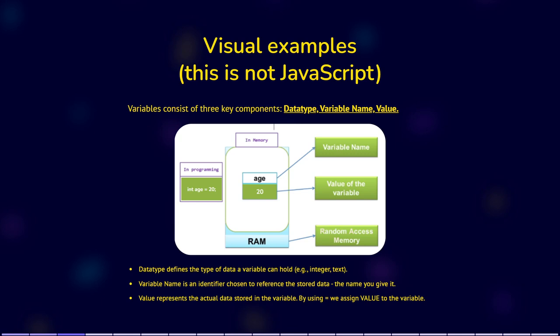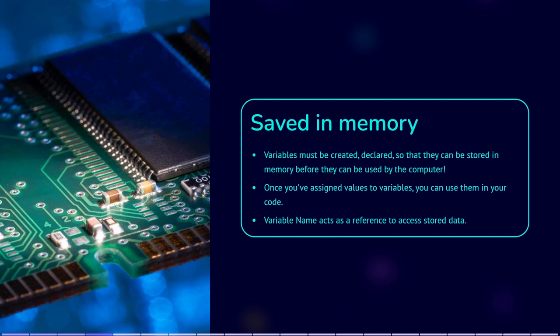20 is the value of the variable. If you ask the computer to write out age, it will write 20. Everything you make — all the variables you create — takes up memory. The variable is saved and remembered in computer memory, and as such, reserves memory from the computer.